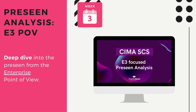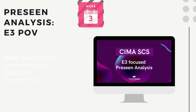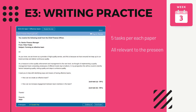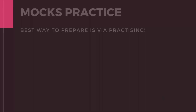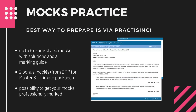We'll delve into analysing the precinct and dive deep into the E3 threats and opportunities, and that analysis should cover all the necessary E3 ICANN statements. To reinforce all that knowledge and information we will kick off with the writing process. We've prepared five tasks for each paper based on the current precinct, and we believe that writing — particularly writing solutions for mocks — is the most crucial part of your case study preparation.